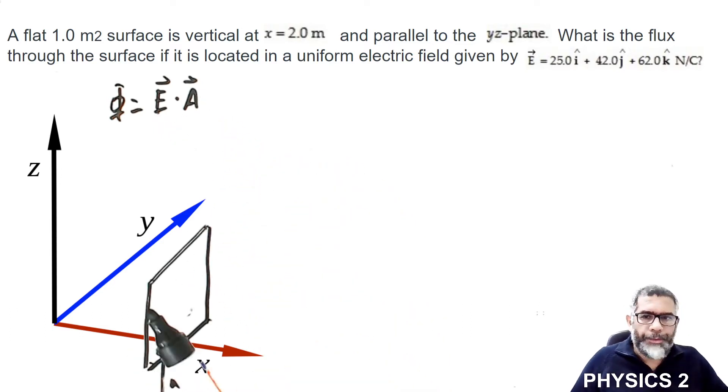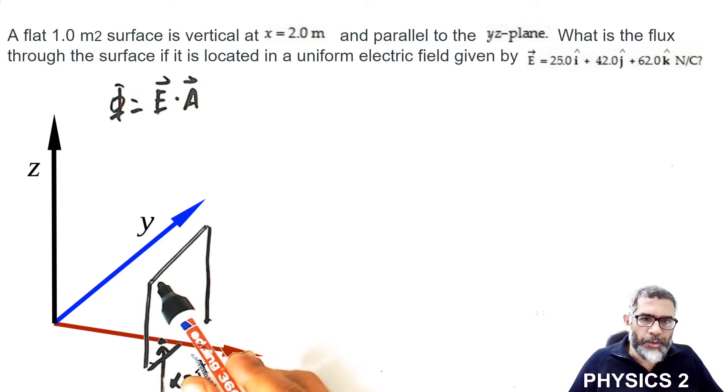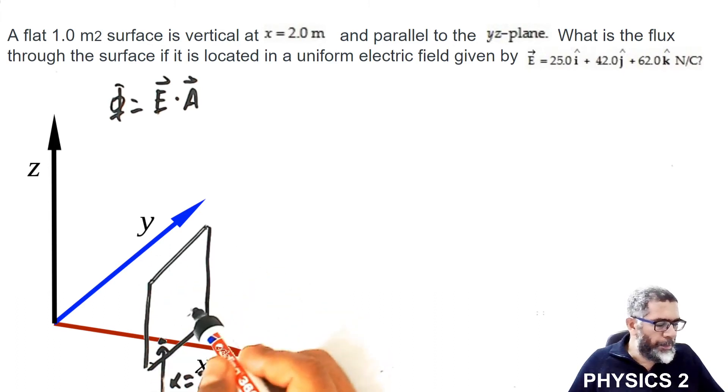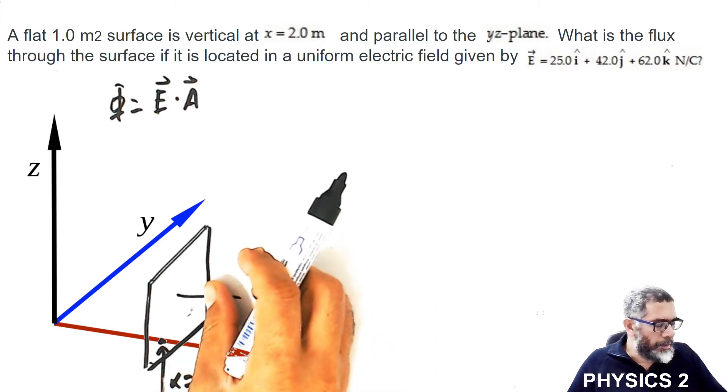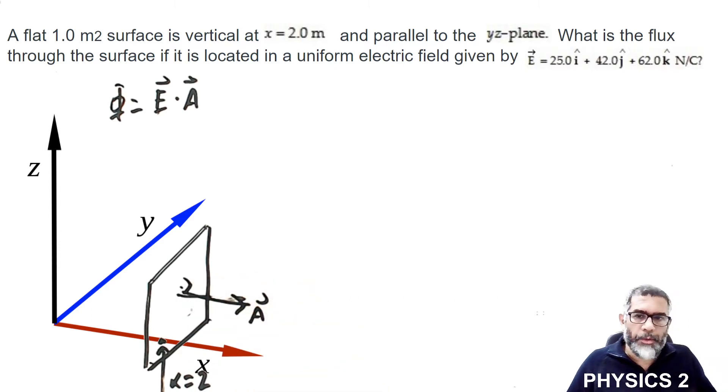So for this surface, what is the area vector? Well, since the area vector is defined to be perpendicular at every point of the surface, and our surface is a plane, that means we have a unique area vector at every point which is parallel to the x-axis. Let me draw an area vector which is parallel to the x-axis, so it is perpendicular to the surface but parallel to the x-axis.